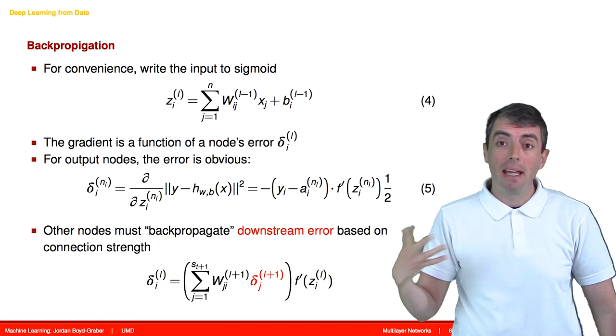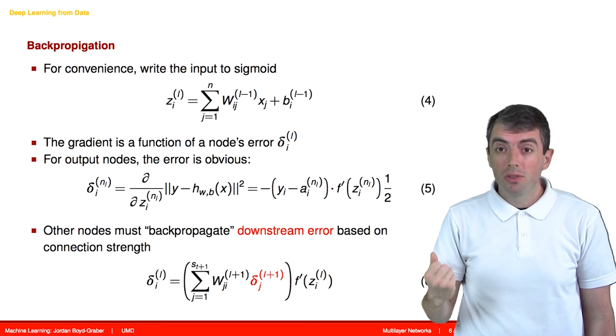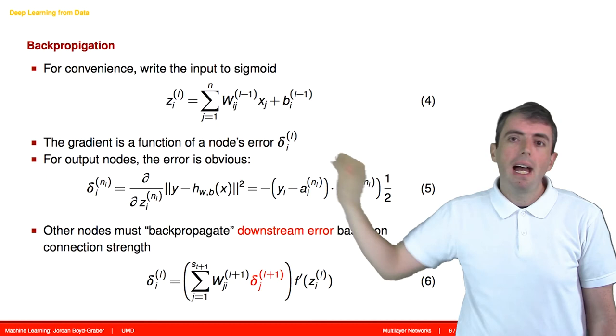Basically, what happens if you apply calculus is that the error of downstream nodes, for example, the final output node, gets pushed back to the nodes that made it make whatever decision it made.